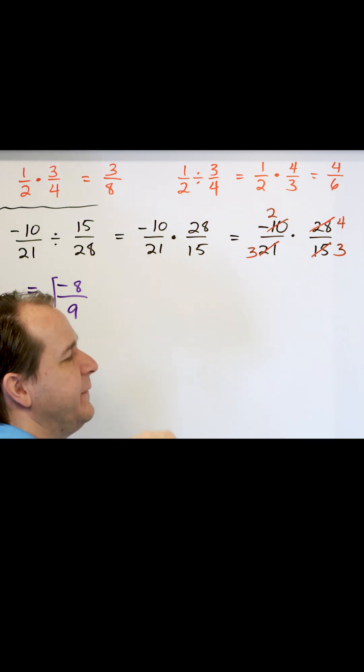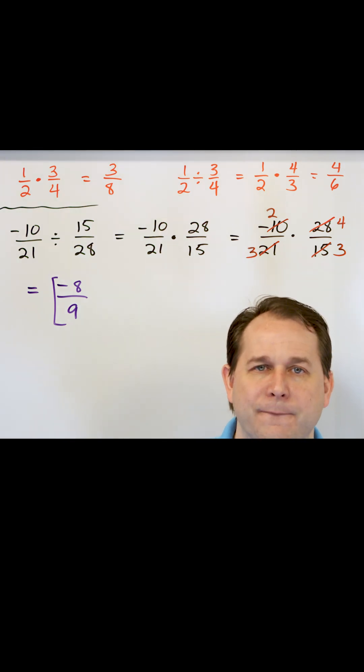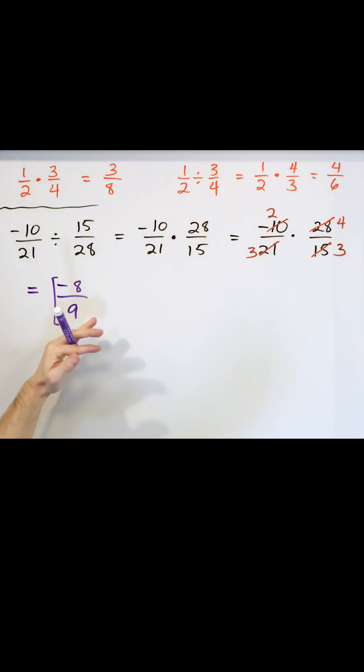And then 21 times 15, I confess I haven't actually multiplied that out, but you can multiply that out and you'll get a denominator. Then you'll have a giant fraction that you have to simplify, and when you simplify it, you will get negative eight ninths.